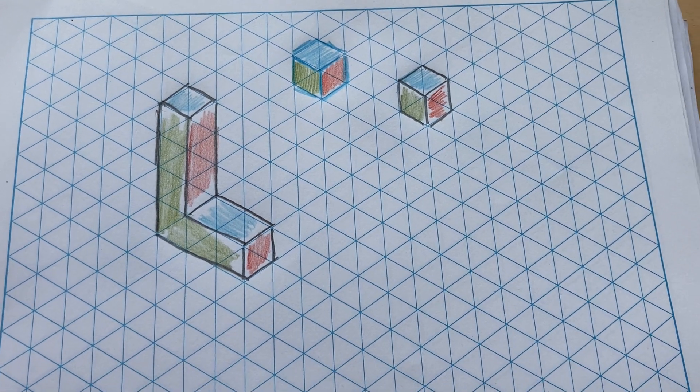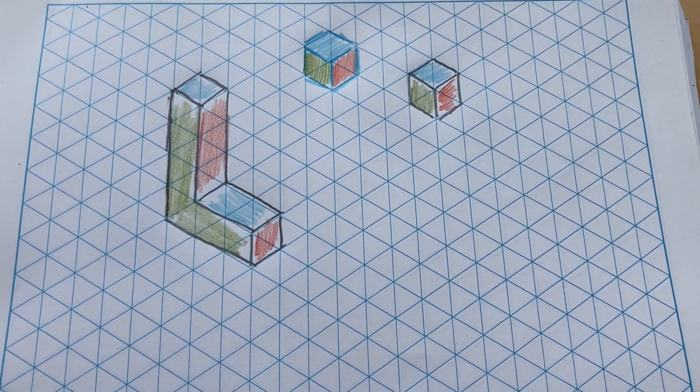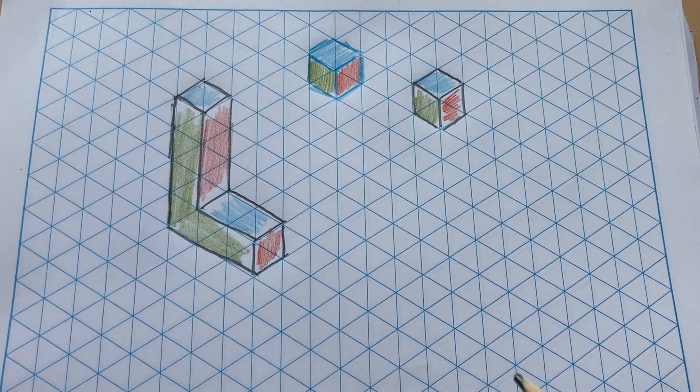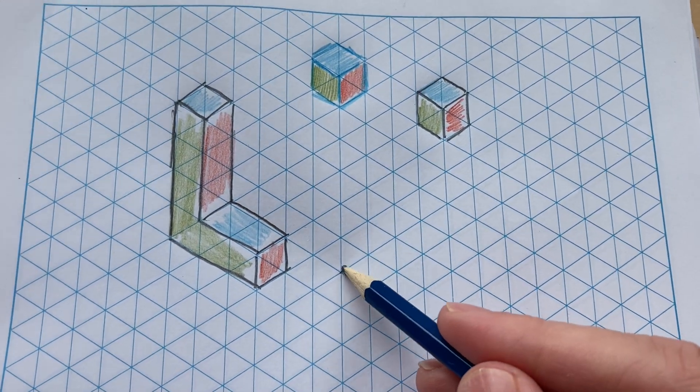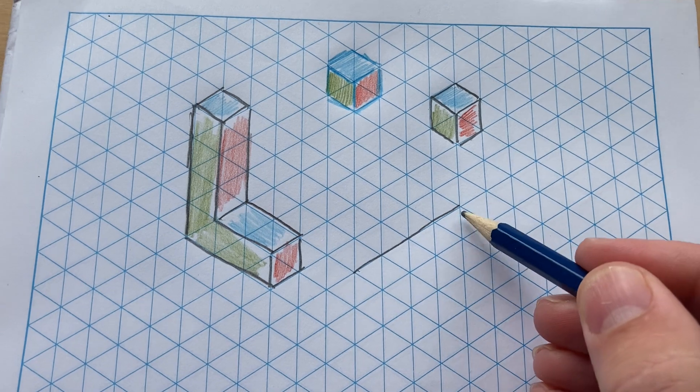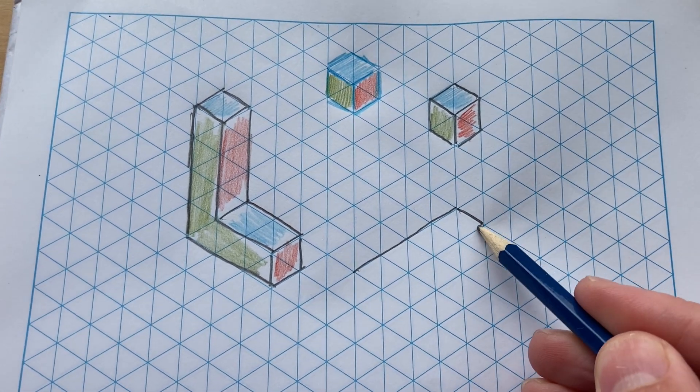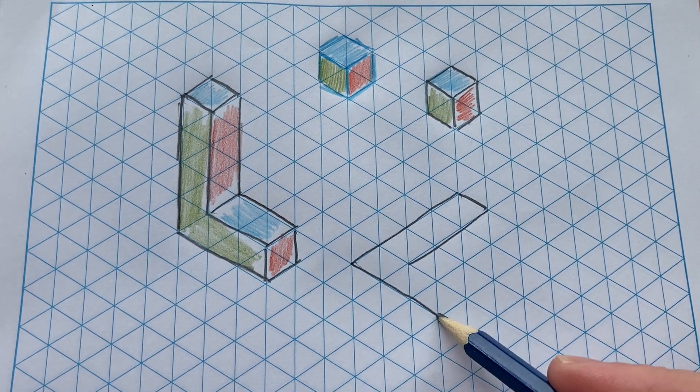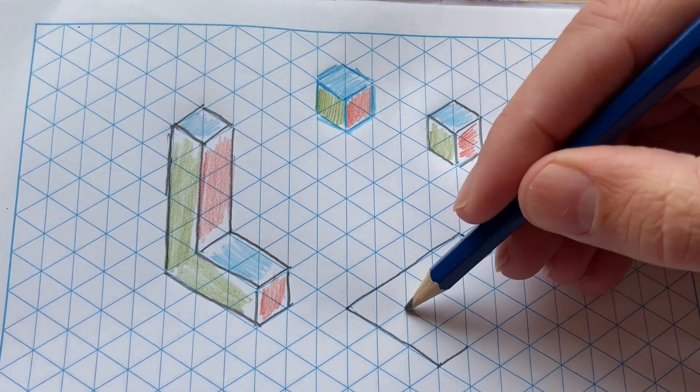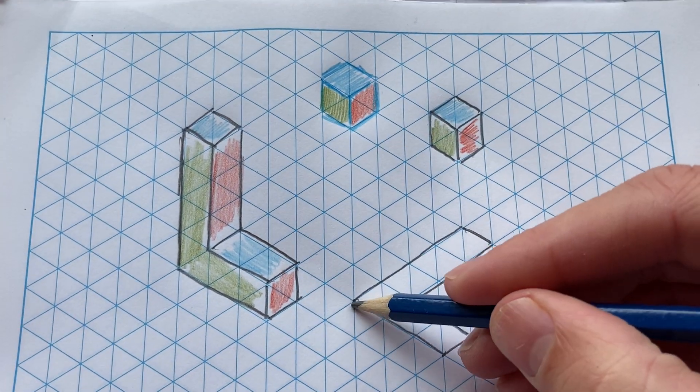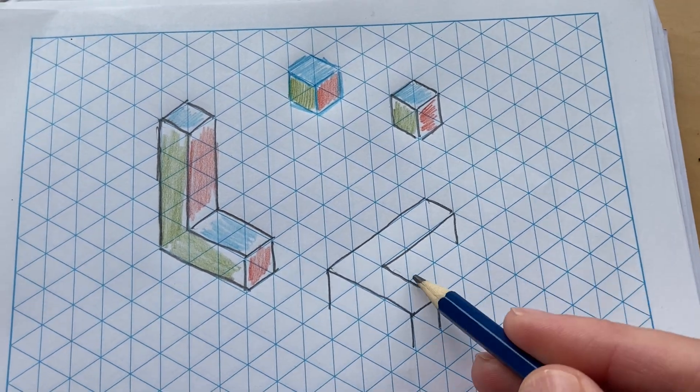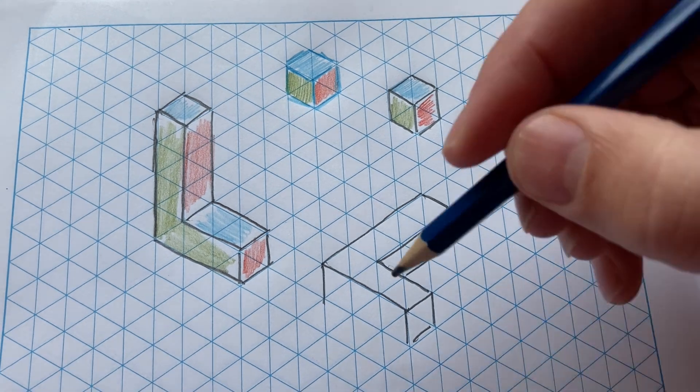Now what you can also do in 3D with isometric paper is imagine pushing this over. So imagine I tip this L over. I would have 4 lying on the side there, down to 3, as though you had a stack of Duplo or some other block shaped letter. And it would be like that.